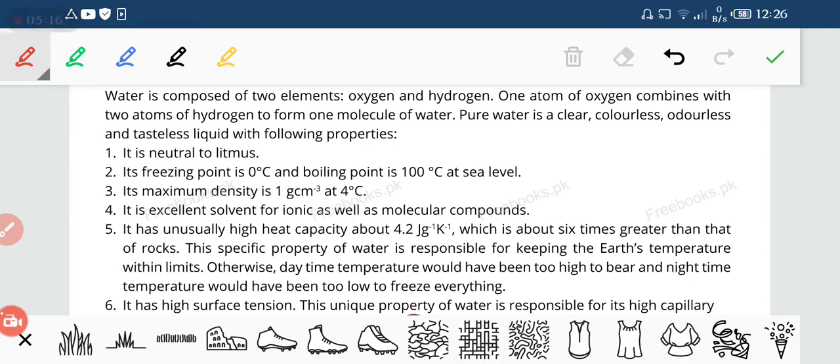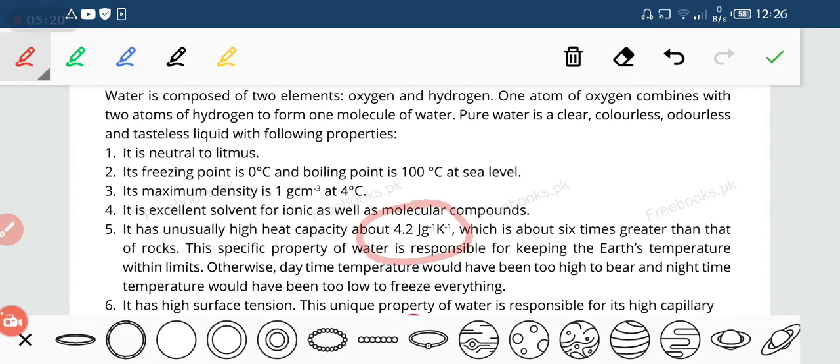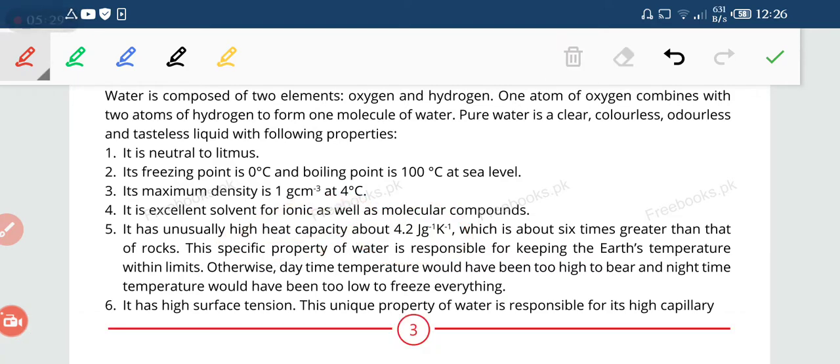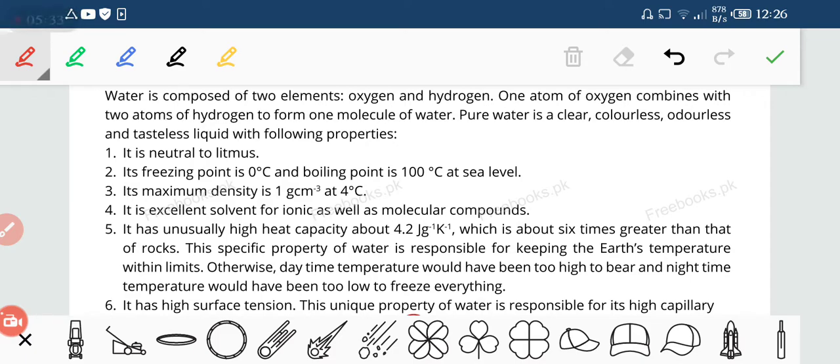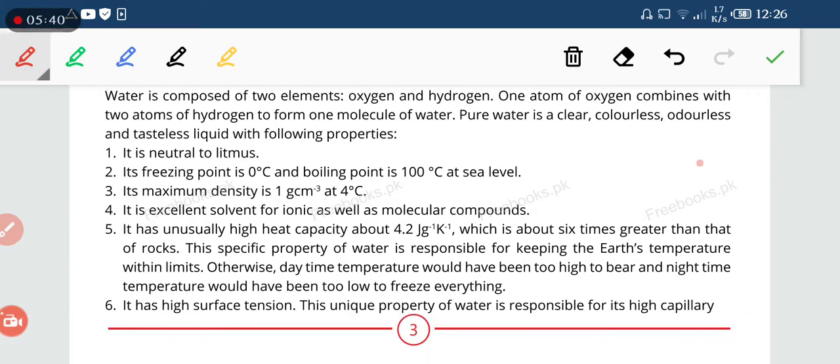Why do we call it universal? Because nearly or maximum universe has some medium. It has unusually high heat capacity, about 4.2 joule per gram per Kelvin, which is about six times greater than that of rocks. Rocks ki nisbat iski heat capacity itni zyada hai. This specific property of water is responsible for keeping the earth atmosphere within the limit. Otherwise, daytime temperature would have been too high to bear, nighttime temperature would have been too low to freeze everything. Agar humare paas heat capacity na ho water ki, toh din mein itni garmi ho jaye ki hum bardasht na kar sakein aur raat ko itni thand ho jaye ki hum freeze ho jayein.